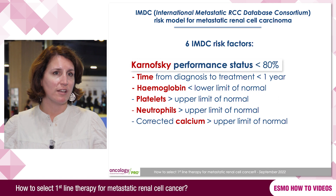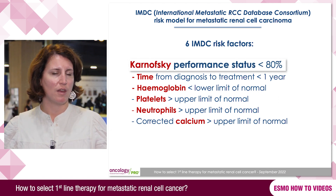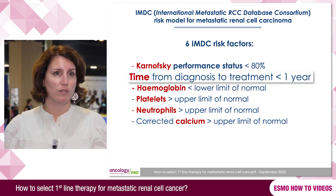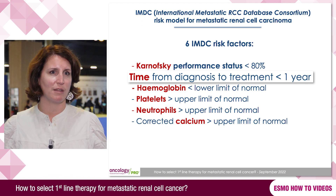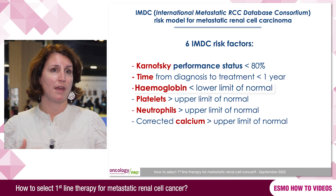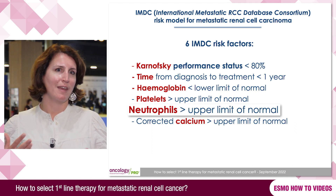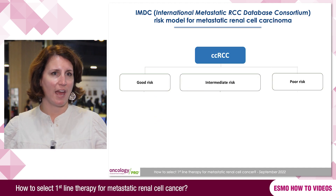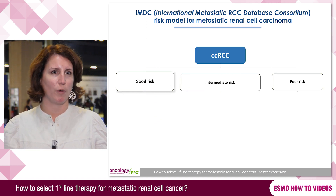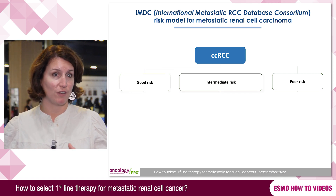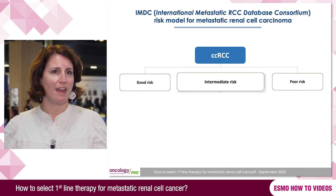The IMDC classification is very easy to perform. It only requires a physical assessment: is my patient highly symptomatic or not? You need to know the history of the disease — is it synchronous or asynchronous metastatic disease, with progression requiring systemic treatment more than one year ago or not, because if it's more than one year the kinetic of the tumor is slower. The biological features include anemia, high platelets, thrombocytosis, high neutrophils, inflammatory syndromes, and hypercalcemia. If your patient has none of those six factors, they are good prognosis. One or two factors means intermediate risk, and three or more means poor prognosis. That's the IMDC classification.